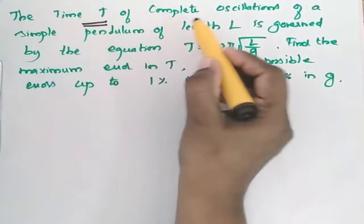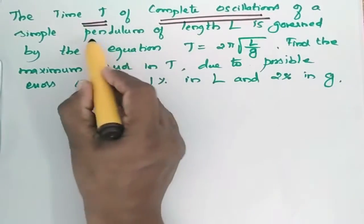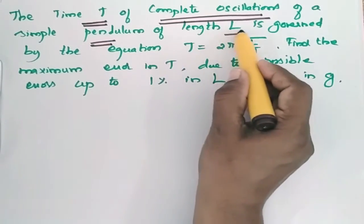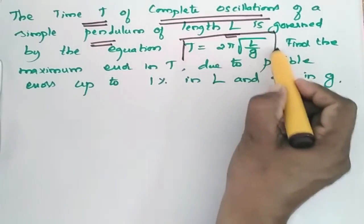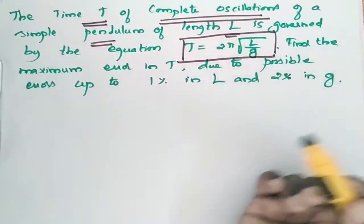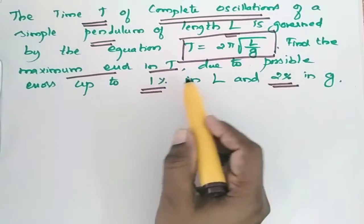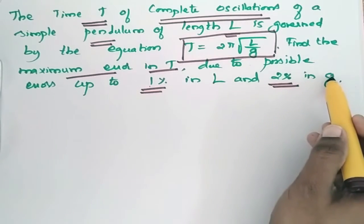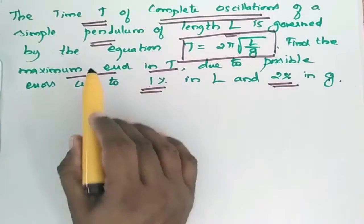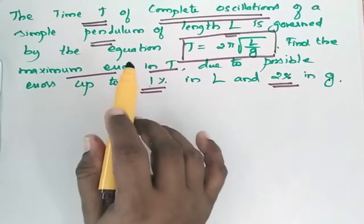The time T of complete oscillations of a simple pendulum of length L is governed by T = 2π√(L/g). The maximum error in L is 1% and in g is 2%. We have to find the maximum error in T.